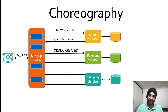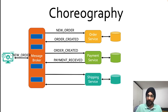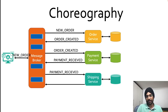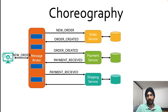So the payment service has now consumed the 'order created' event. Once it finishes its workflow, it publishes its own event called 'payment received'. Now the shipping service will be subscribing to the topic where 'payment received' events are published. The shipping service may also subscribe to 'order created', so it has all the information it needs to ship an order.